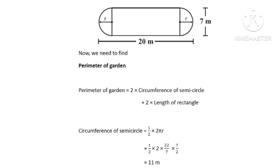Now we need to find perimeter of garden. Circumference of semi-circle equals pi r. Perimeter of garden equals 2 times circumference of semi-circle plus 2 times length of rectangle equals 2 times 11 plus 2 times 13 equals 22 plus 26 equals 48 meters.